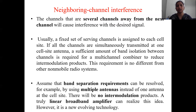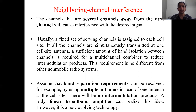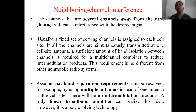Next, coming to neighboring channel interference. The channels that are several channels away from the next channel — the second, third, fourth — will cause interference with the desired signal; this is called neighboring channel interference. Usually, a fixed set of channels is assigned to each cell site. If all channels are simultaneously transmitted at one cell site antenna, a sufficient amount of band isolation between channels is required. For a multichannel combiner to reduce intermodulation products, this requirement is no different from other non-mobile radio systems.